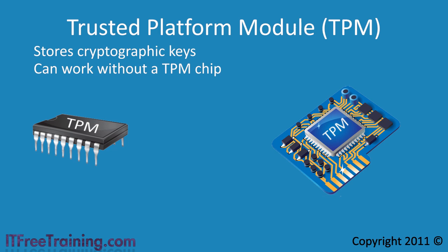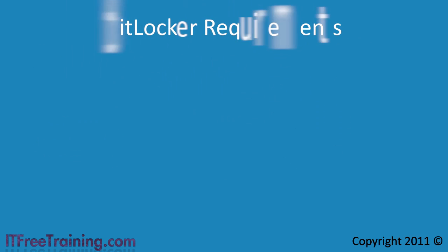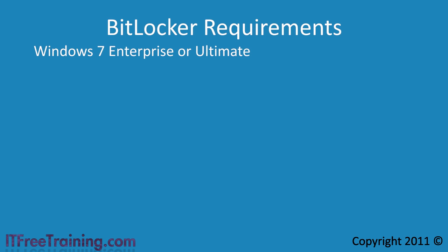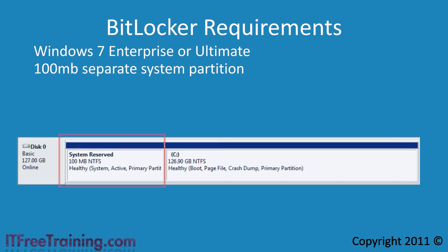Before you can start using BitLocker, your system needs to meet a few requirements. First, you need to be running Windows 7 Enterprise or Ultimate Edition. BitLocker also requires a 100 megabyte system partition. When you install Windows 7, this partition will be created automatically, but the partition will not be given a drive letter so you may not have even known it existed.